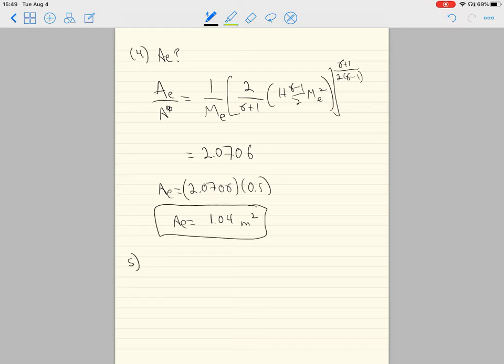Finally, we want to find the rocket thrust and the specific impulse. Let's start with the thrust. This is easy because in general F equals m_dot*UE plus AE*(PE - P_ATM), but this is zero because it's given that the exit pressure is the atmospheric pressure, so this is just m_dot times UE.